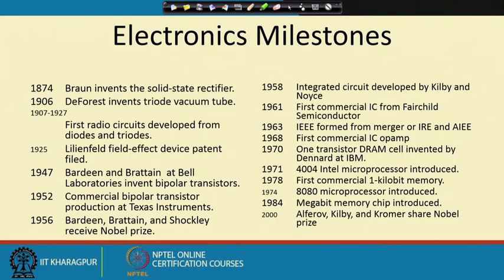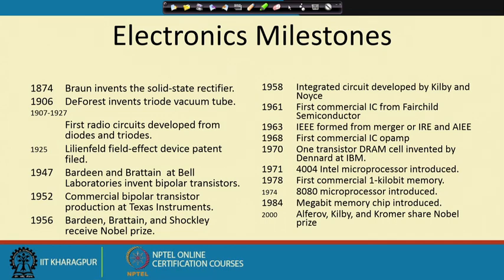Another Nobel Prize came in 2000 to Alferov, Kilby, and Kromer — they received the Nobel Prize for memory and related work. This is how the electronic industry came up. After 2000, as you are all familiar, lots of developments are taking place every day, with this electronics industry advancing towards better processors with higher capabilities and better memory storage capacities.